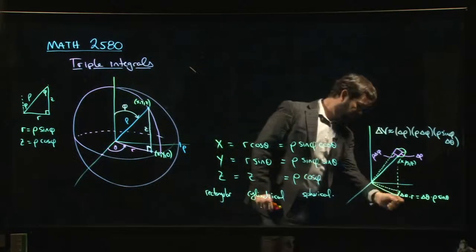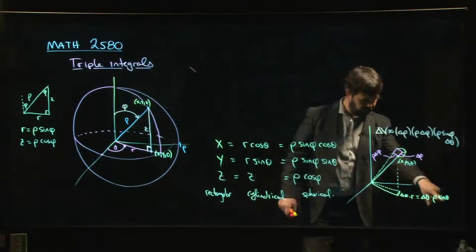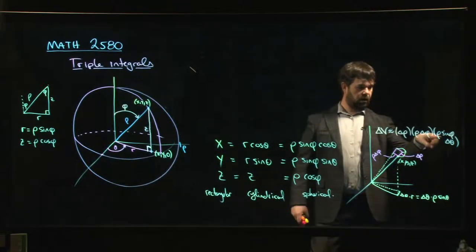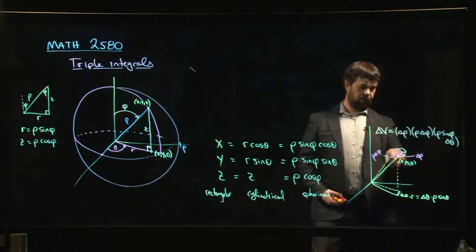And we saw that r can be written as rho sine phi. So the length of this bit is going to be r times delta theta, like it was for polar coordinates, but r is rho sine phi. So we get rho sine phi times delta theta for the length of that piece.